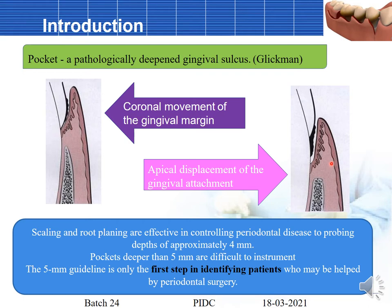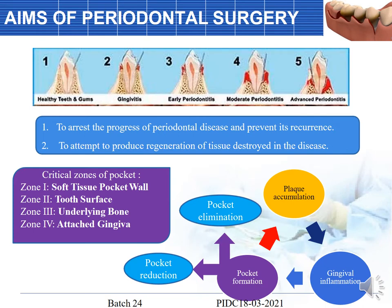The potential patients for surgery are identified by the 5 mm guideline. Scaling and root planing are effective in controlling periodontal disease to probing depths of approximately 4 mm, but pockets beyond 5 mm are difficult to instrument. The 5 mm guideline is the first step in identifying patients who may be helped by periodontal surgery.